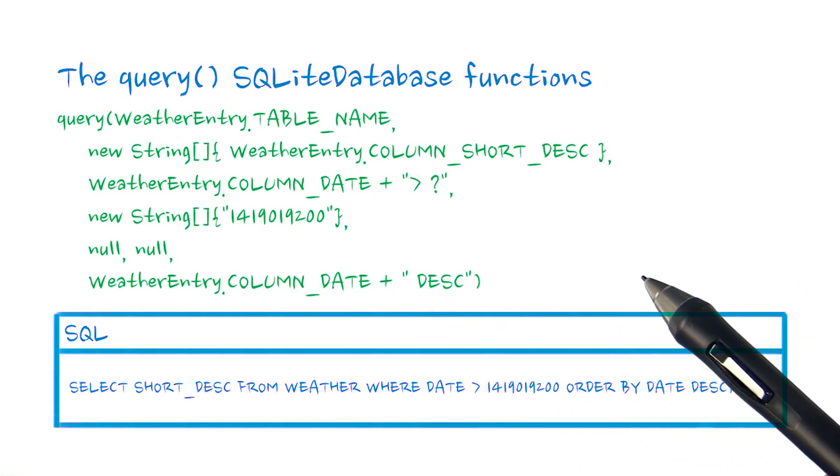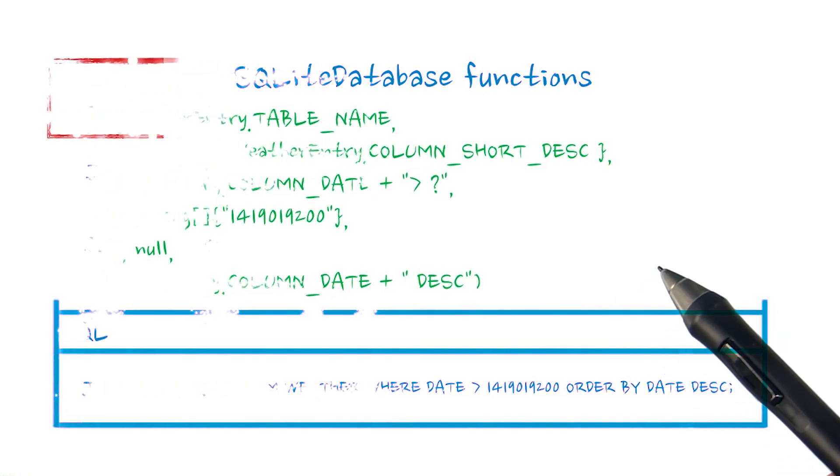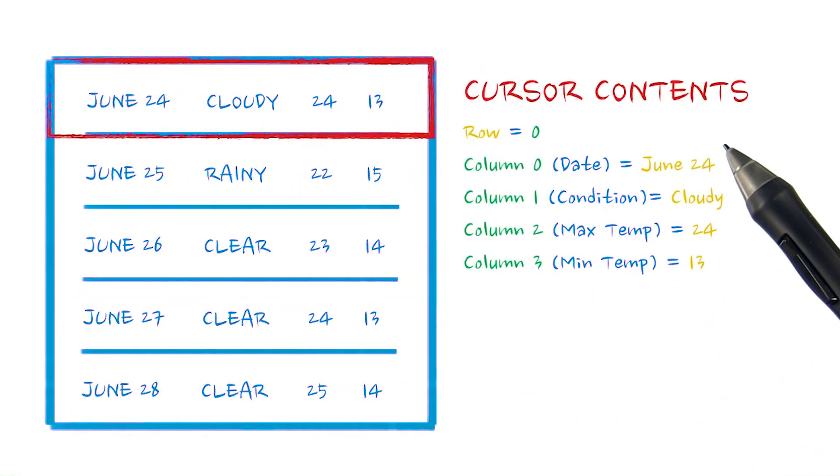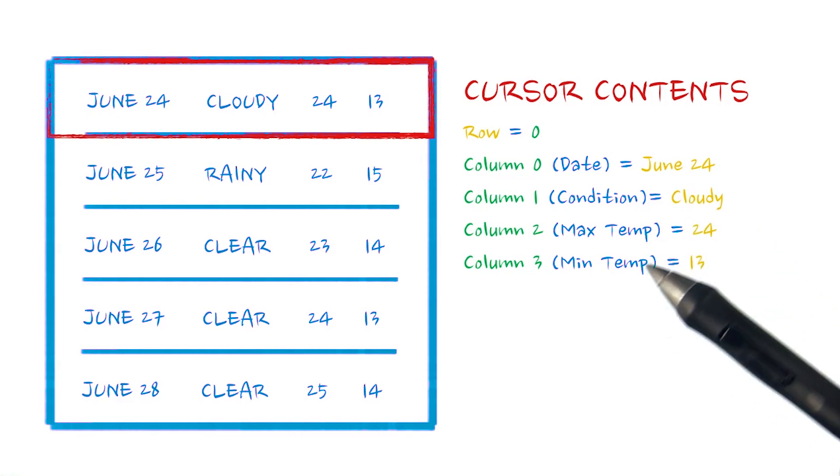The query functions all return a database cursor. A cursor object is a control structure that enables traversal over the rows and columns of our query result set.